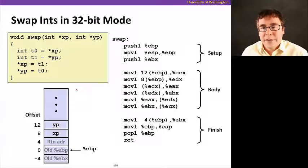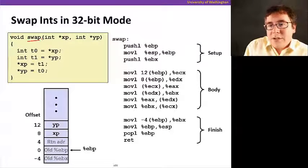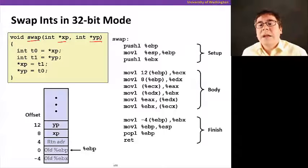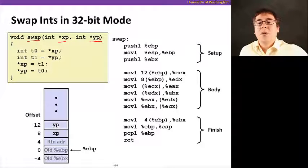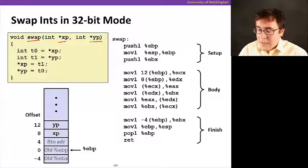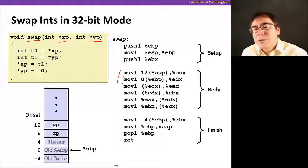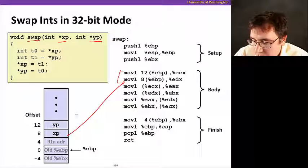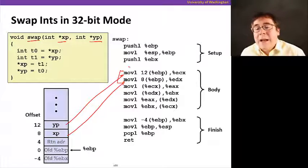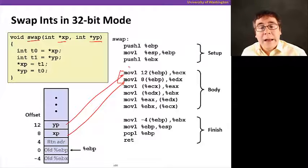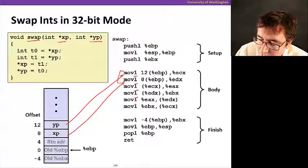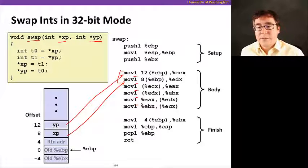Here's the example that we saw in the previous video. We had this swap function that received two pointers, xp and yp as parameters, and then it swaps the contents of these pointers. Remember that these two instructions here, what they were doing is they were reading the pointers that were stored in the stack because parameters in the IA32 ABI is passed via the stack. And we've used all moveL instructions because we're moving four bytes worth of data.